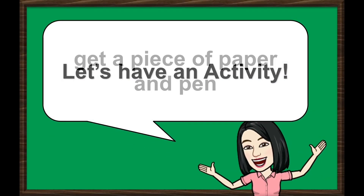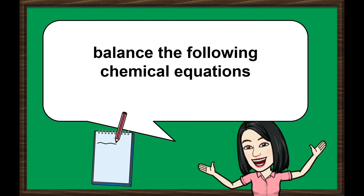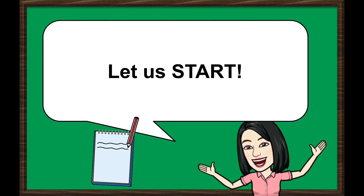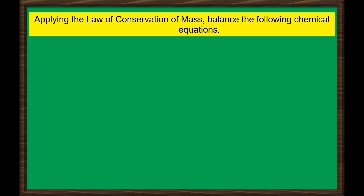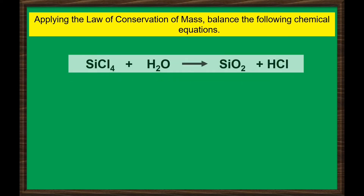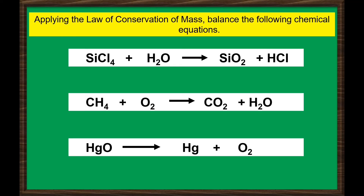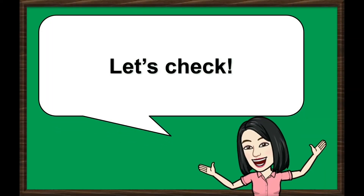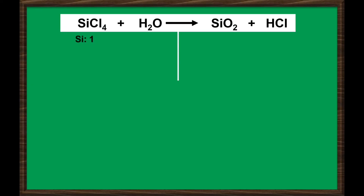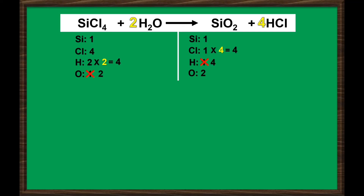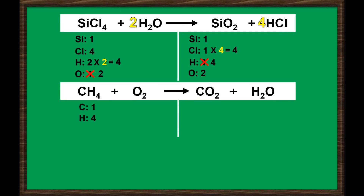Let's have an activity. Get a piece of paper and a pen. Applying the law of conservation of mass, balance the following chemical equations. You may pause this video as you answer this activity. Let us check your answers. Here is the answer for each chemical equation.